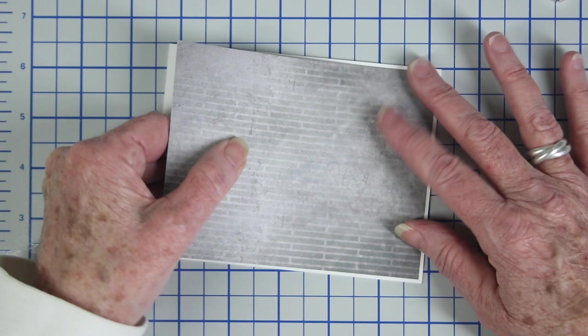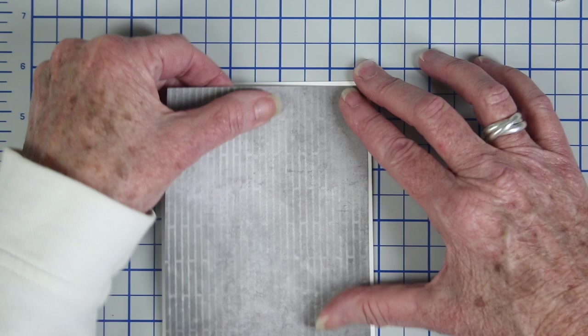I've used some adhesive, and now I'm just applying this to an A2 notecard, and I've trimmed my paper down to where I'll have a small white border around the outside.